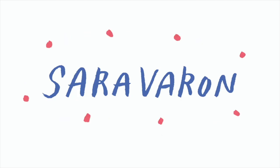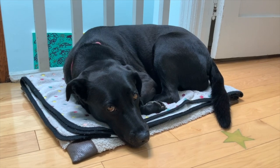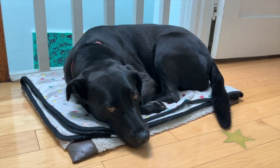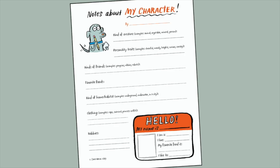Hi everybody! My name is Sarah Varen and this is my assistant Sweet Pea. Today we're going to talk about designing a character for your own story. I've made you this handy sheet to fill out with a lot of questions to help you learn more about your character.